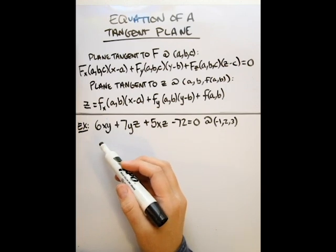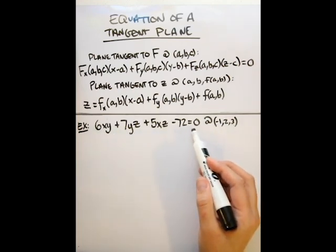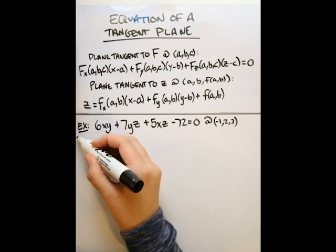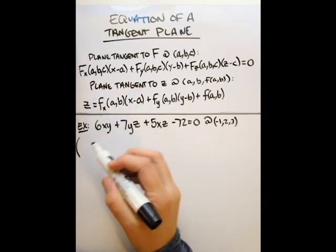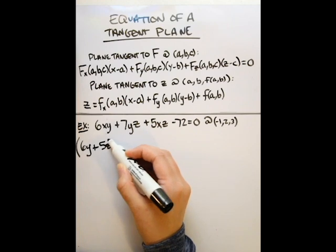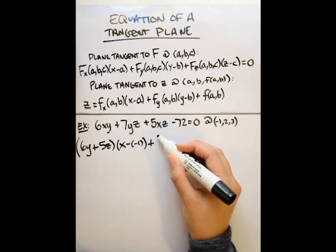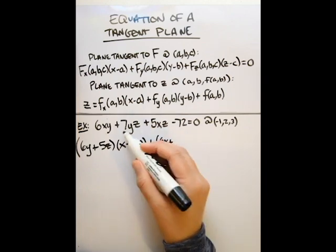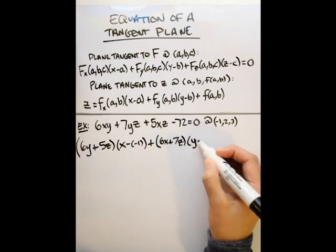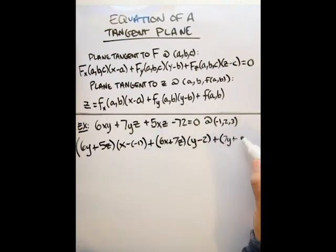For this example, we're going to find the plane tangent to our surface at the given point negative one, two, three. The form of our surface is given in the implicit form, so we're going to use that form of our tangent plane. We need the partial derivative with respect to x first, which is going to be 6y plus 5z, times x minus negative one. Then the partial derivative with respect to y gives us 6x plus 7z times y minus two, plus the partial derivative with respect to z, which is 7y plus 5x, times z minus three. All of this equals zero.